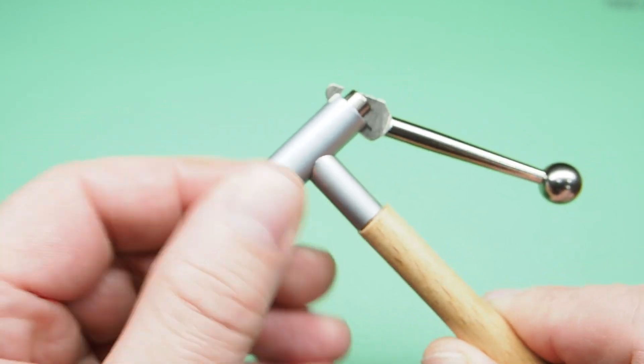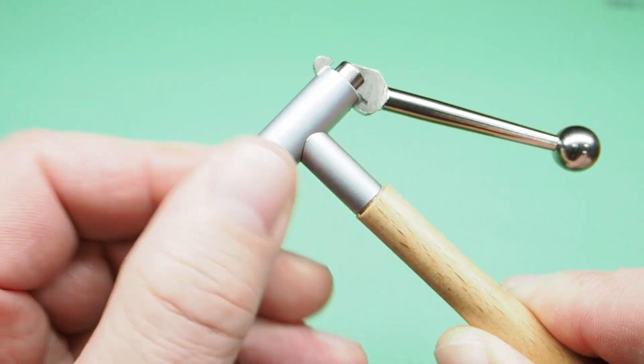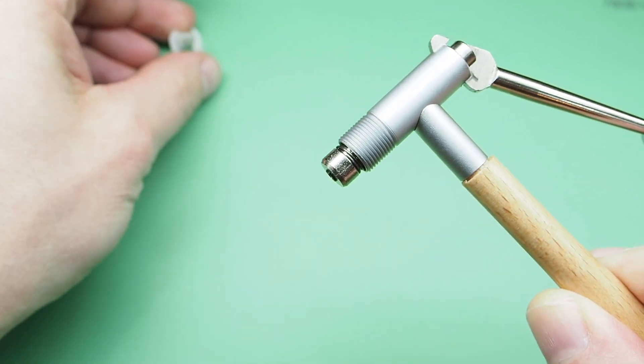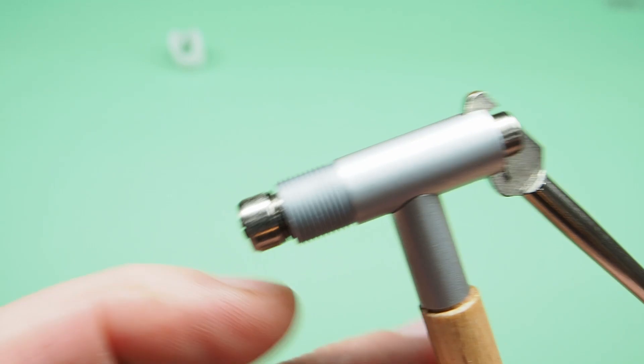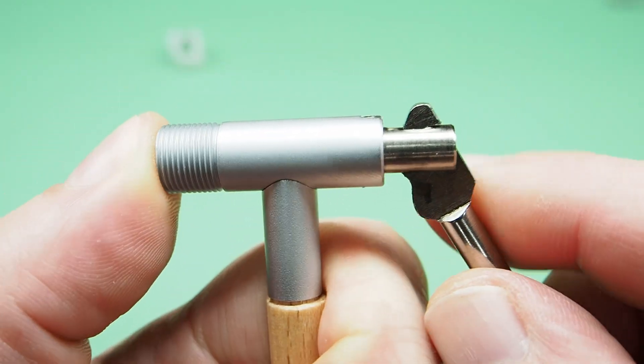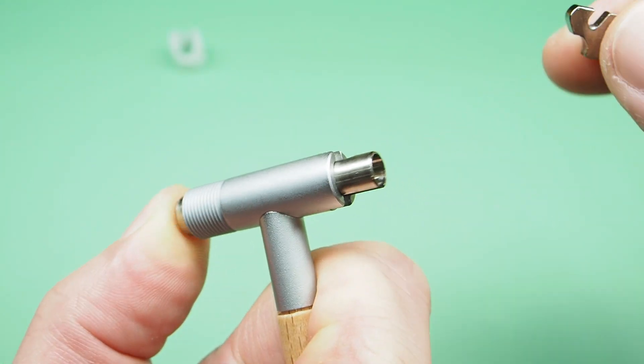Let me disassemble the tool. We can start with this plastic part. You need to push here and you will be able to move the lever to a position where you can remove it. Just like so.